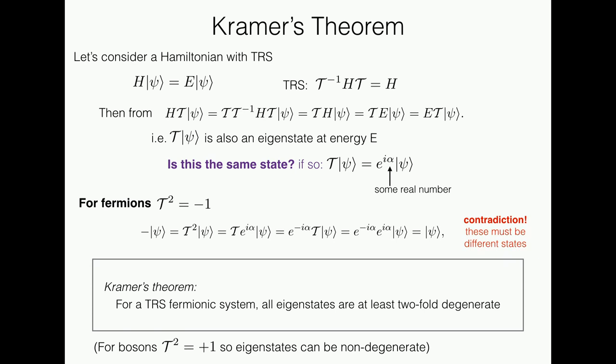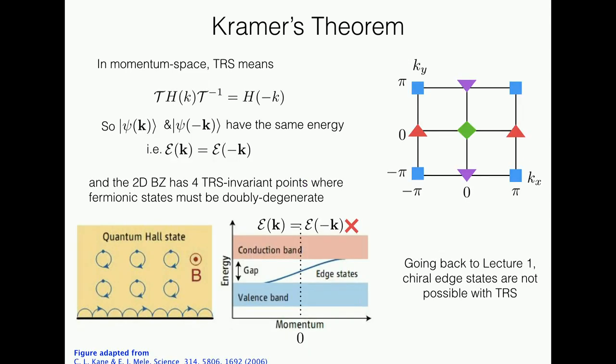A key point: for bosons, T² = +1, so we don't have Kramer's theorem. This actually caused a lot of problems in photonics for a while before we figured this all out. What they realized in 2005 was that this has really important consequences for topology. If we consider a Hamiltonian H(k), the time-reversal operation gives H(−k). The time-reversal partner of an eigenstate at momentum k is an eigenstate at momentum −k with the same energy, giving a symmetry in the Brillouin zone.